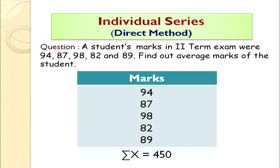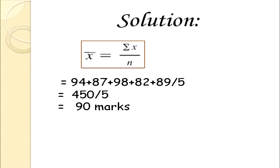Let's take an example. We are asked to find the average marks of students. The marks are 94, 87, 98, 82, and 89, so the summation of x is 450. Always write the formula first — mean = Σx / n — as formulas carry marks and guide you. So mean = 450 / 5 = 90 marks. Never forget to write units.